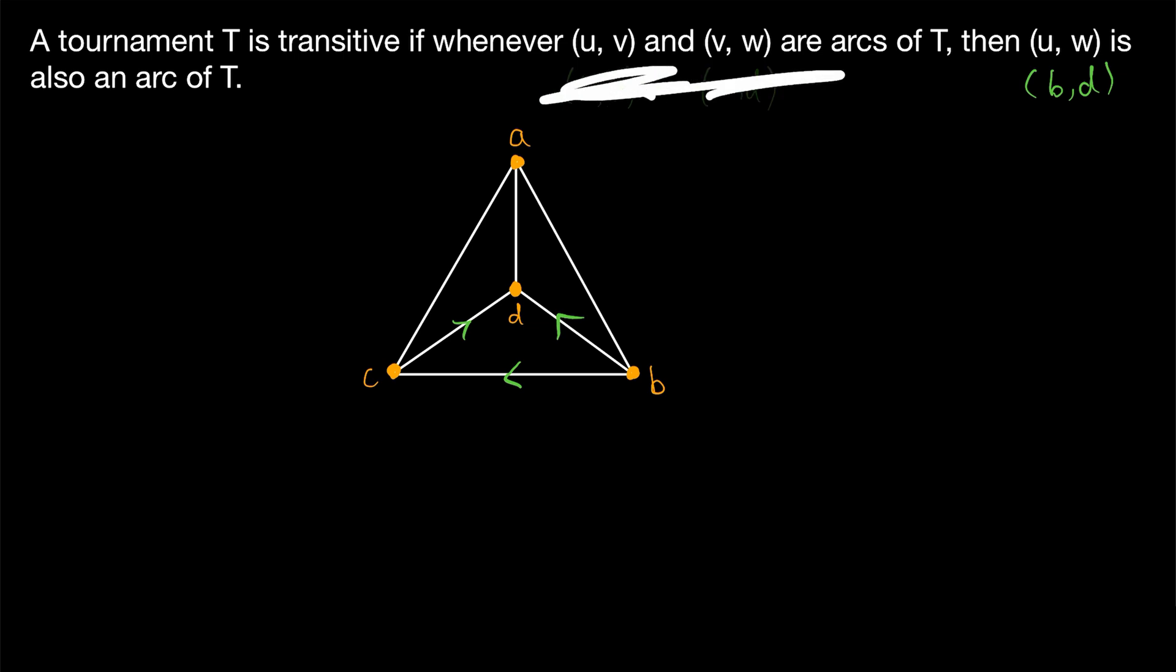Alright, let's carry on with the last few edges. We can go ahead and orient this edge from d to a. Then, since c is adjacent to d and d is adjacent to a, c needs to be adjacent to a. Similarly, b needs to be adjacent to a. And now we have a transitive tournament.